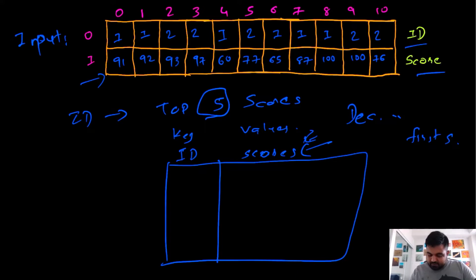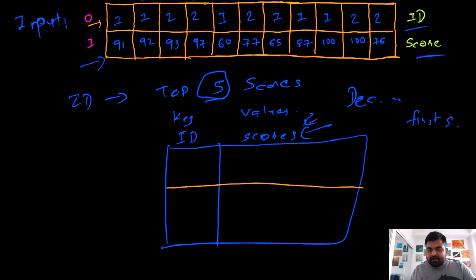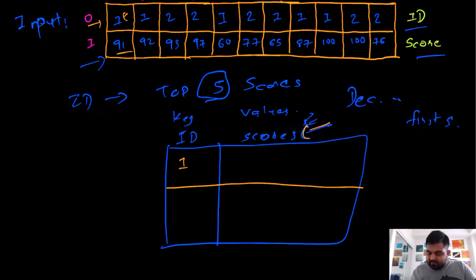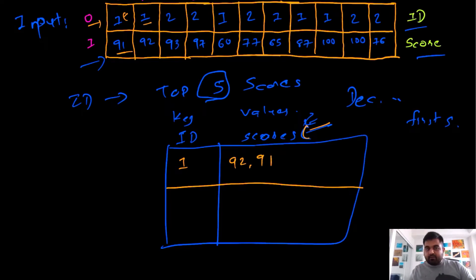Let's see what that means. We start iterating over the input and first check whether the ID already exists in the hash map. If it does not exist, we add it. Initially we find ID one does not exist, so we create an entry for ID number one and enter the score 91. Then we find ID number one again with score 92, and since we keep scores in decreasing order, we update accordingly. We then find ID number two — it doesn't exist, so we create an entry with score 93. Again we get score 97 for ID two, so we update maintaining decreasing order.